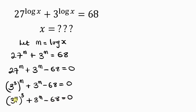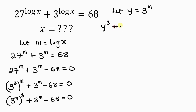Now I have 3 to the power of m in both places, so it is easy to let y be equal to 3 to the power of m and substitute. So I'm going to be writing y to the power of 3 plus y minus 68 equal to 0.